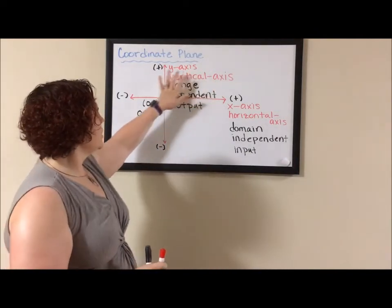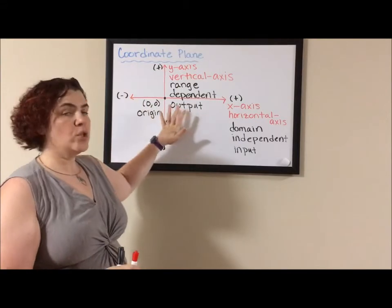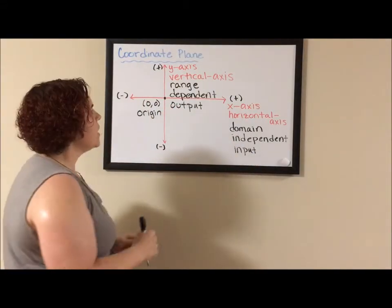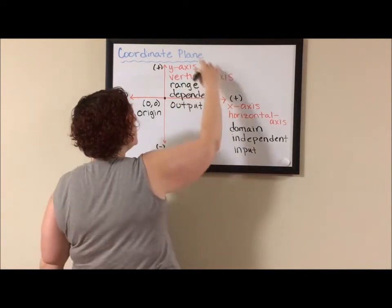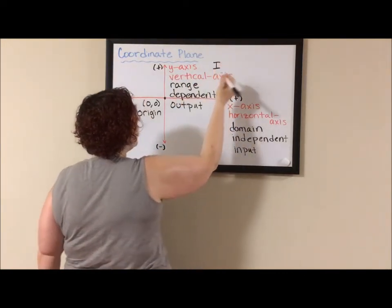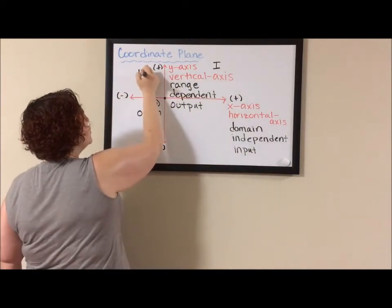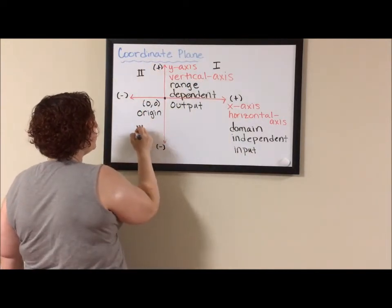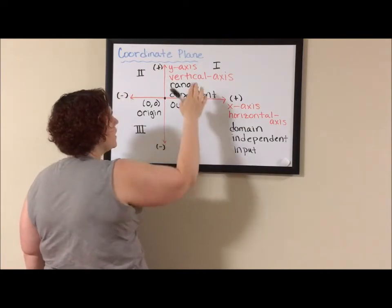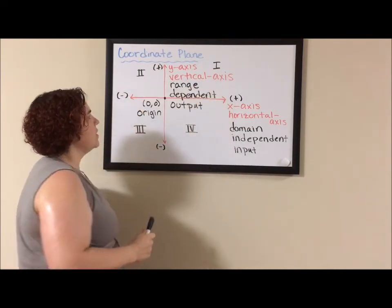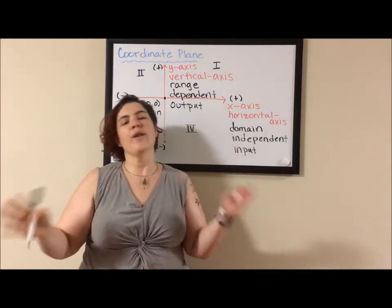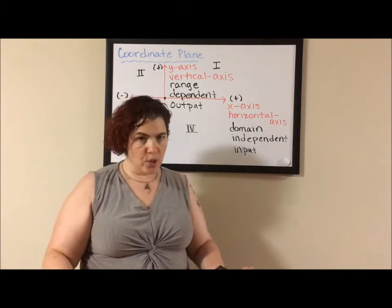Each of the four sections that are broken up by the two number lines depict a specific quadrant. And when we talk about the quadrants, we call this one, this positive, positive one, the first quadrant, quadrant one. This is quadrant two. This down here is quadrant three. And this over here is quadrant four. You can remember that they go one, two, three, four, because it looks like a letter C. And as we all know, quadrant starts with the letter C. Okay, no. Quadrant starts with the letter Q.